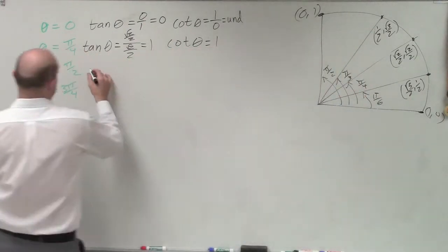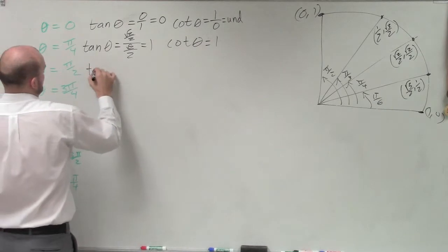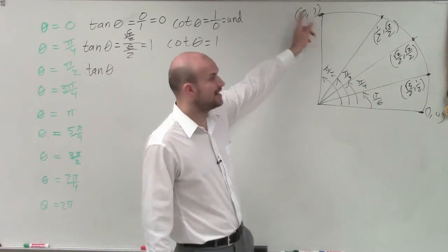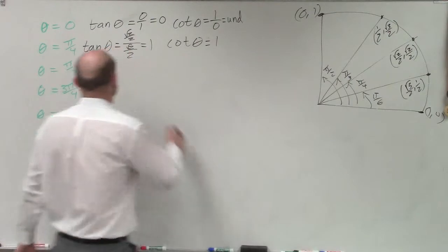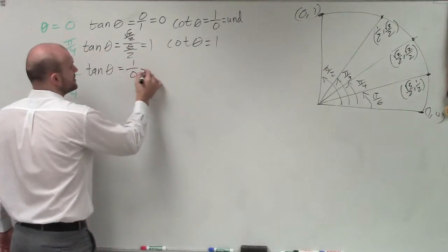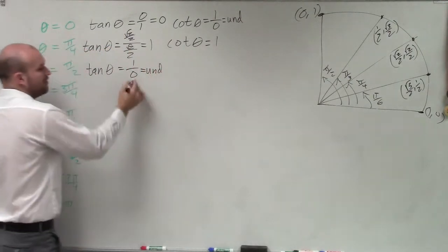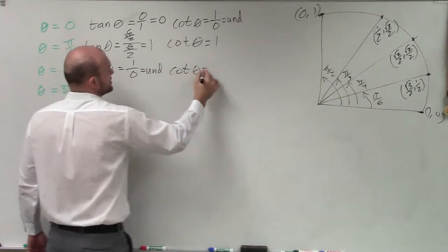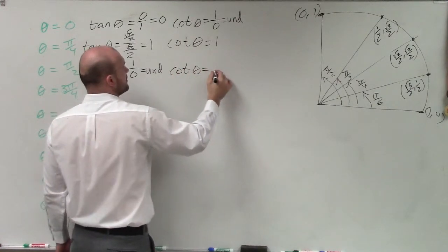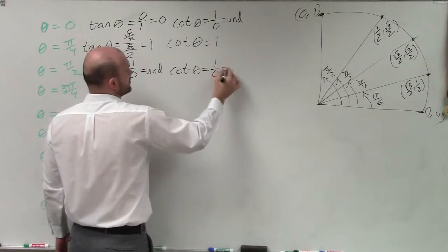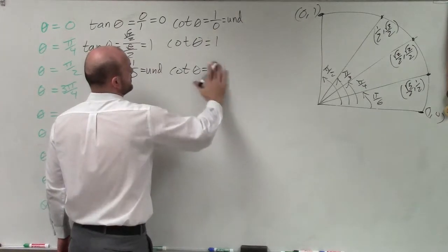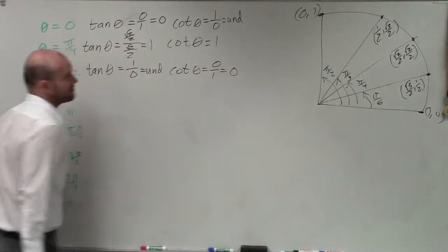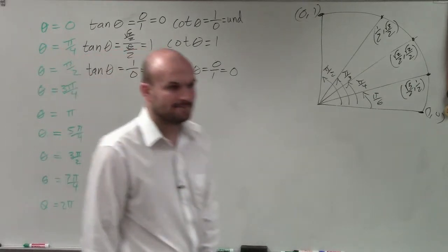Let's look at pi halves. Tangent of theta for pi halves is 1 over 0, so tangent is undefined. If I reciprocate these, the cotangent of theta is going to be 0 over 1, which equals 0.